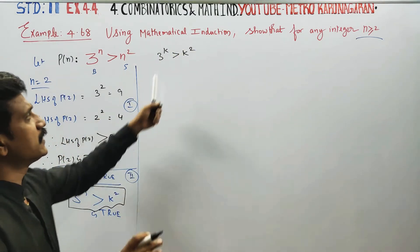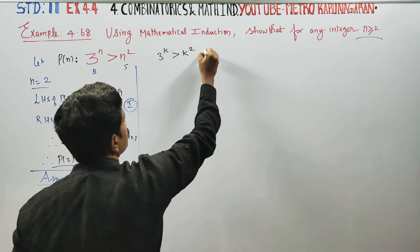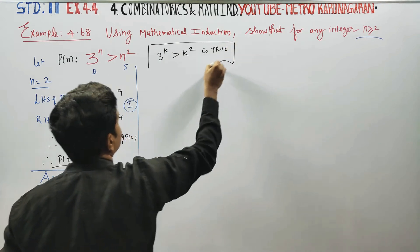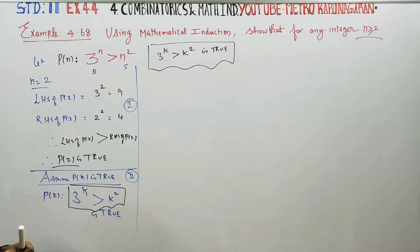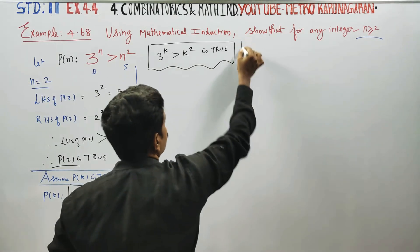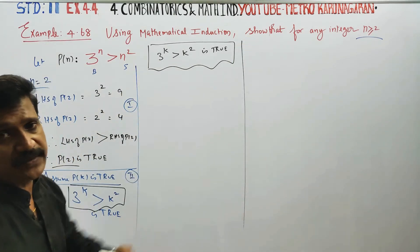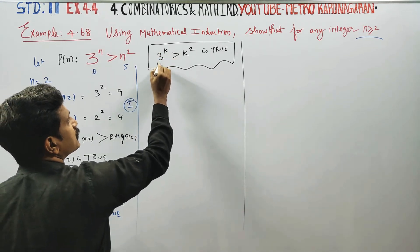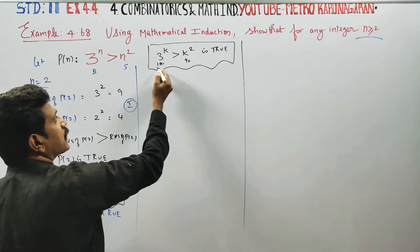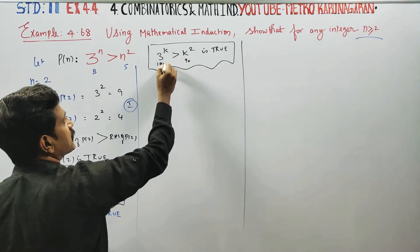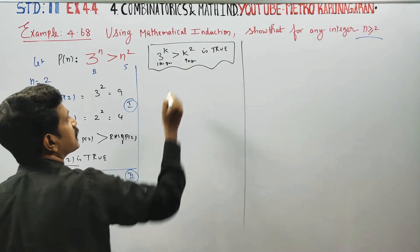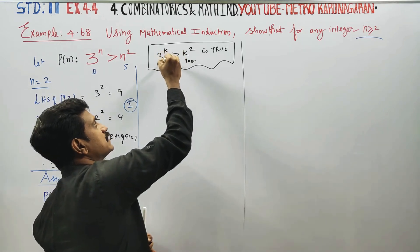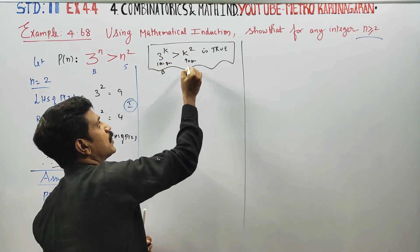We will use this assumption. 3 power k is greater than k squared is assumed true. Think of it this way: if 3 power k is 100 grams, then k squared is something smaller, like 90 grams. This is big and this is small — that is what the inequality means.